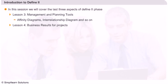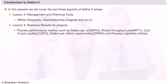As we begin the fourth lesson, we would learn about the finer aspects of business results for projects. We will look at the various process performance metrics like the defect per unit or DPU, the rolled throughput yield, cost of poor quality, defects per million opportunities or DPMO, and the process capabilities indices.